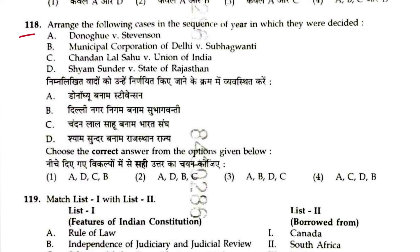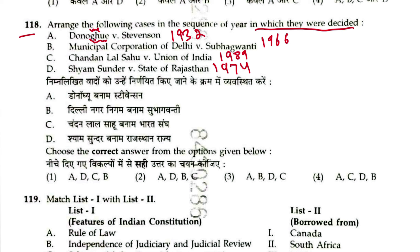Question 118: Arrange the following tort cases in sequence of year decided. Donoghue vs. Stevenson — 1932. Municipal Corporation of Delhi vs. Subhagwanti — 1966. Shyam Sunder vs. State of Rajasthan — 1974. Chandra Lal Sahu vs. Union of India — 1989. Sequence is A, B, D, C. Answer is 3.